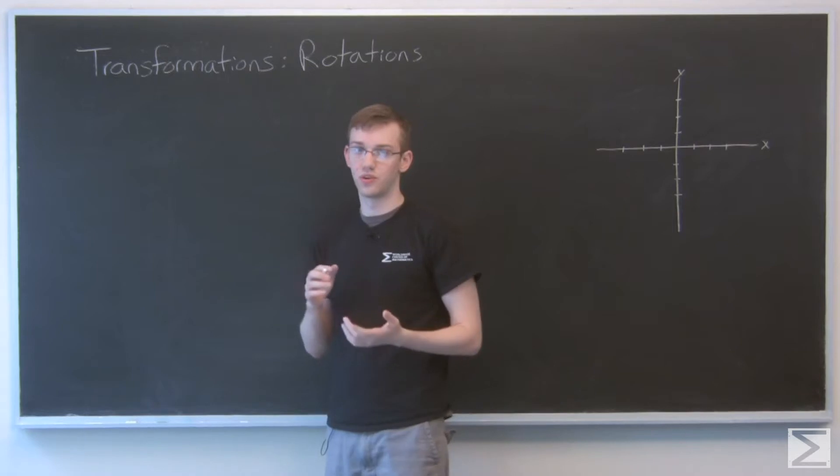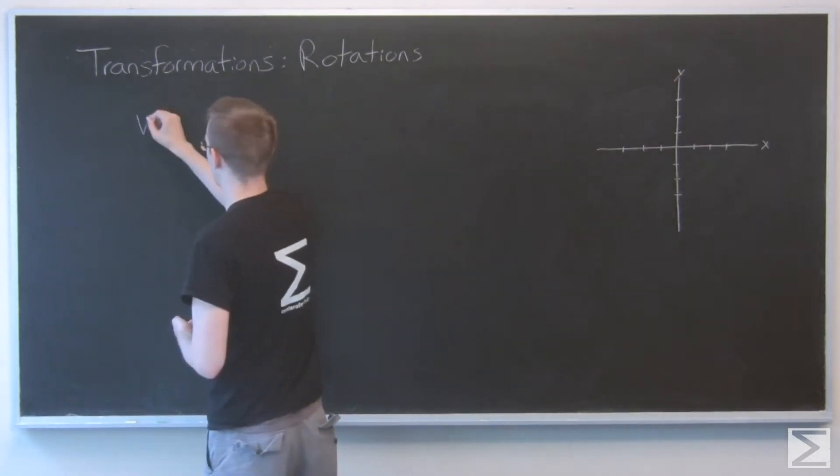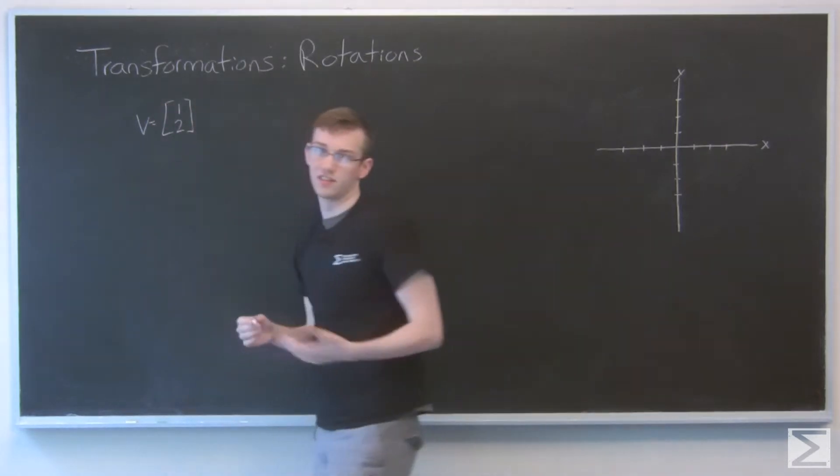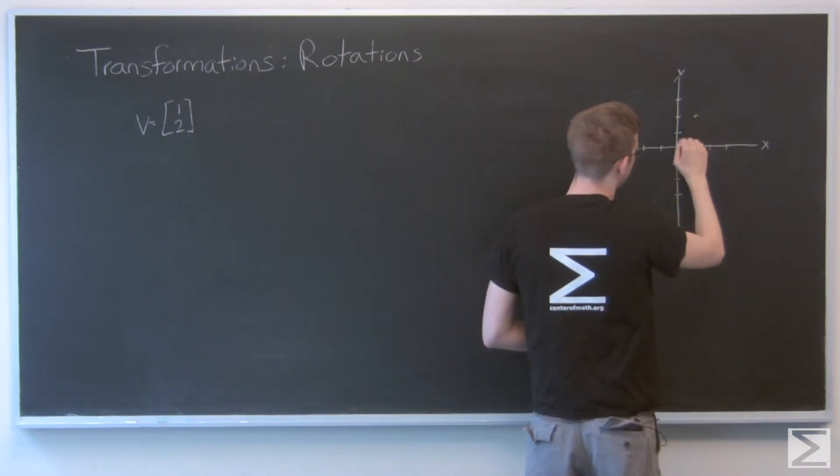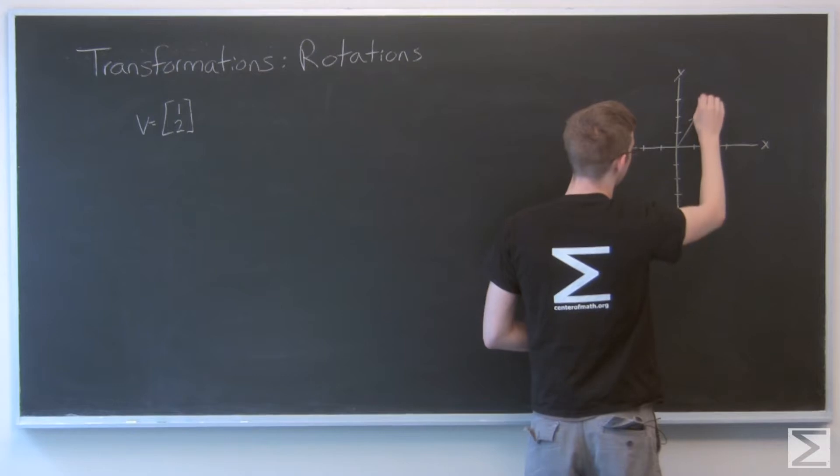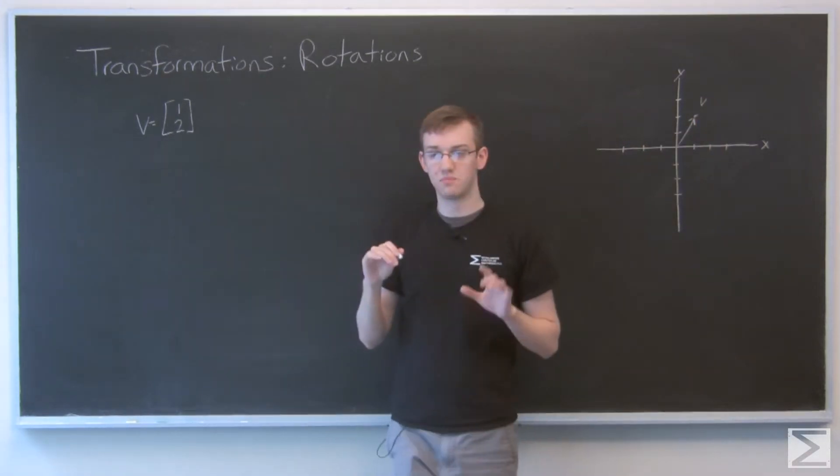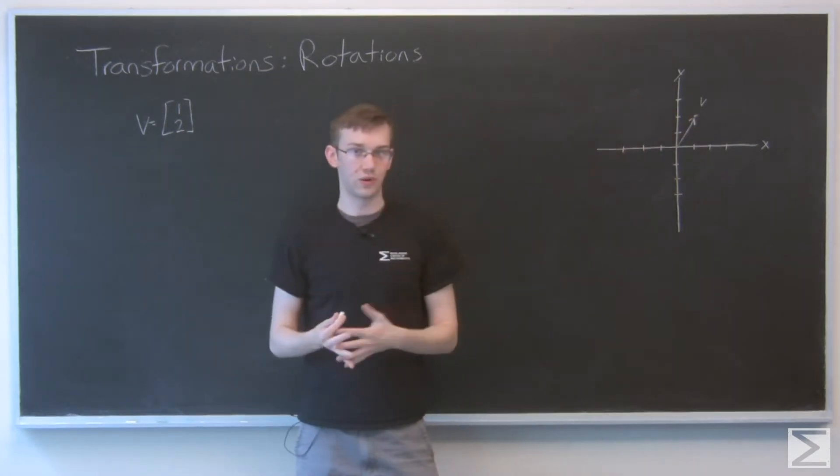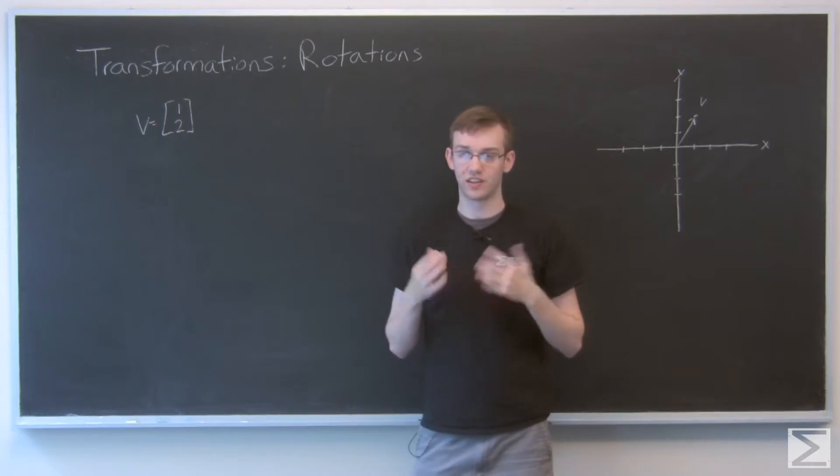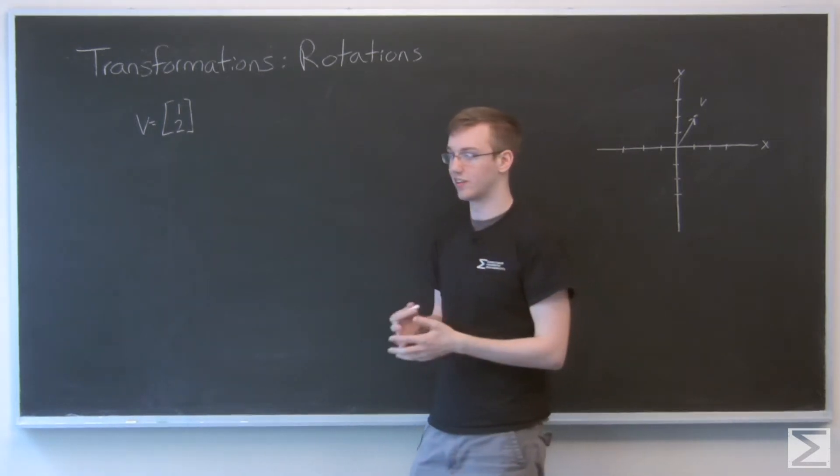And for all these linear transformation examples, we've been using the vector 1, 2. I think that's pretty easy and simple to understand. So here's 1, 2. So we're going to look at matrices that can rotate this one however far we want. And I'm going to give you the keys to be able to do whatever obscure angle you want. And we're going to look at a couple different examples.